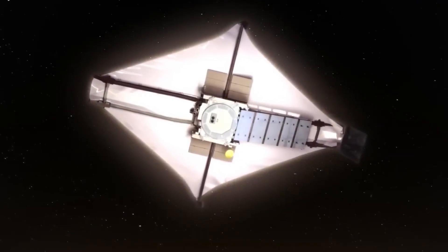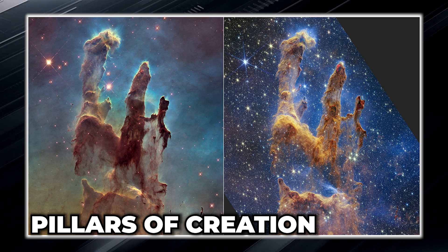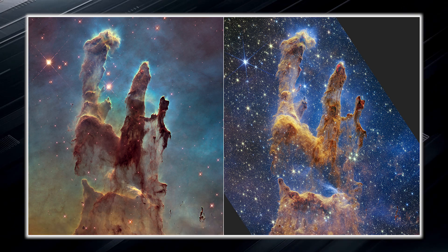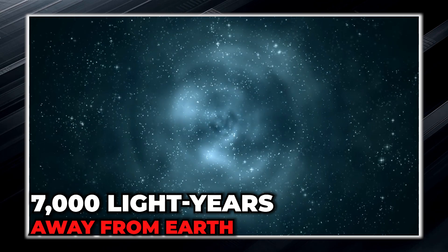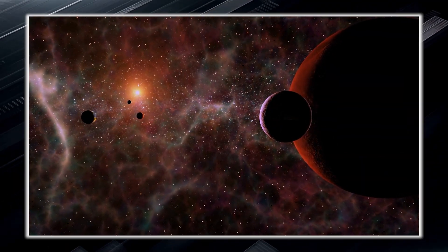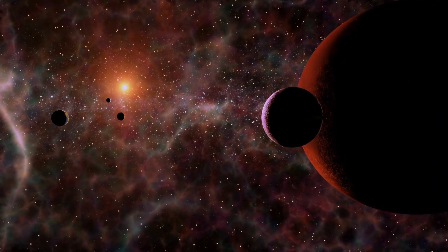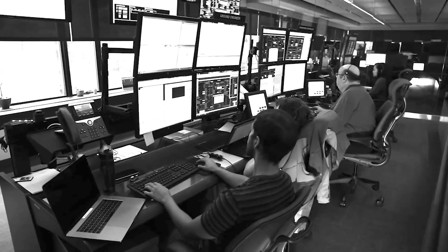When the James Webb turned its instruments toward the iconic Pillars of Creation, it captured the famous dust clouds in incredible detail. These pillars are located in the constellation Serpens, about 7,000 light years away from Earth. The Pillars of Creation are part of the Eagle Nebula, large clouds of gas and dust that were first photographed by the Hubble Space Telescope in 1995.